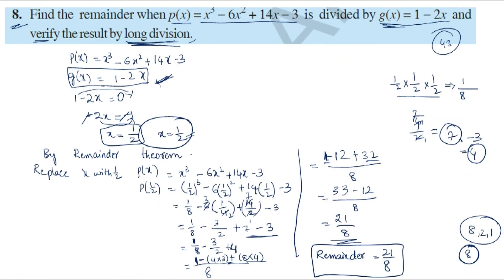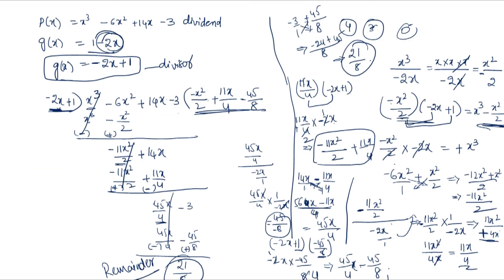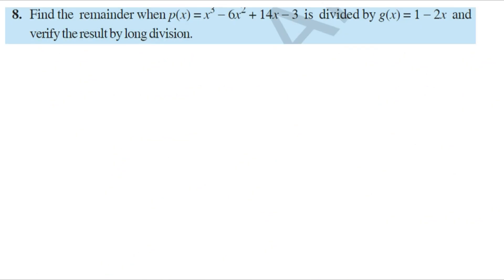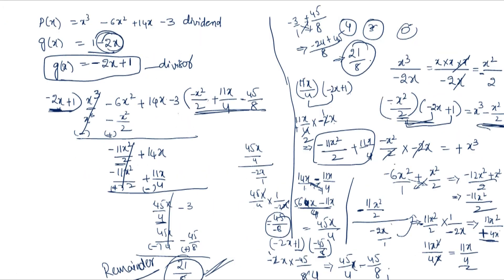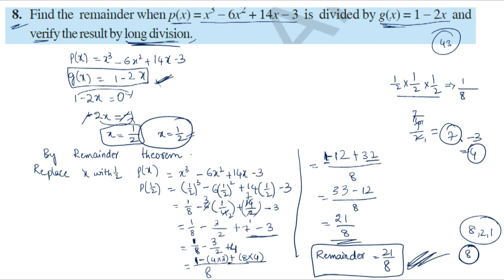The remainder theorem result and the long division result both give 21 by 8, so the answer is verified. Next we will discuss the 9th problem.